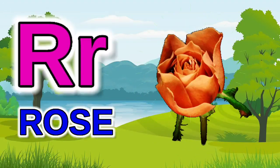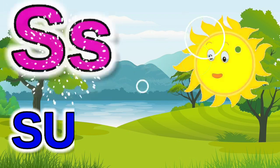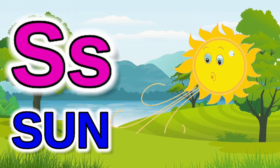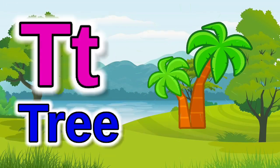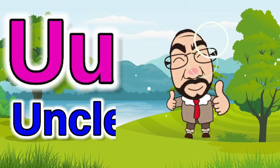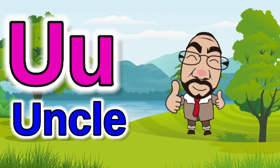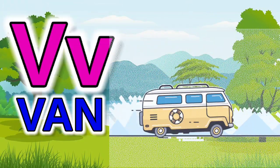R for rose, S for sun, T for tree, U for uncle, V for rain.